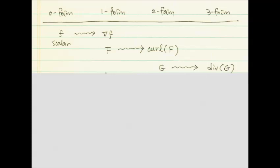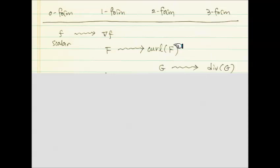The zero-form starts with a scalar function, and then there is the gradient operator — we create a vector field. If you have an arbitrary vector field F, the Stokes theorem introduces a different differential operator and we create another vector field, the curl. And if you have another vector field at the two-form level, we apply another differential operator and create a scalar function. If you start from the scalar, create the gradient vector, and then do the curl operator to the gradient vector, it turns out to be zero — a straightforward calculation using Clairaut's theorem.